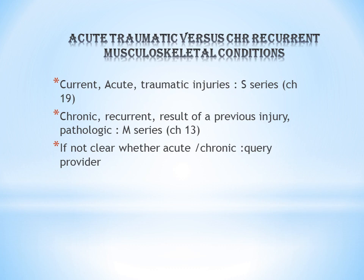The second type is pathologic fracture. Pathologic fracture is the fracture that occurs due to some underlying condition. It is otherwise called a chronic or recurrent fracture, and can be the result of a previous injury. This pathologic fracture is coded as M series — that is, Chapter 13.